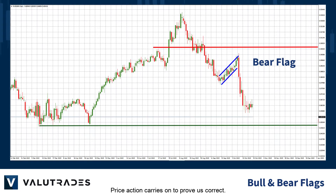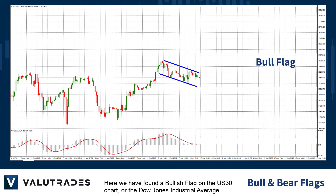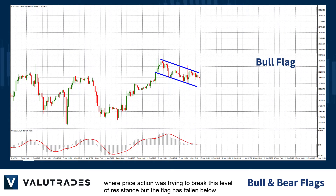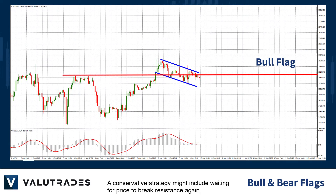Price action carries on to prove us correct. Here we have found a bullish flag on the US30 chart, or the Dow Jones Industrial Average, where price action was trying to break a level of resistance but the flag has fallen below it. A conservative strategy might include waiting for price to break resistance again.